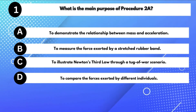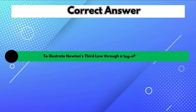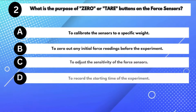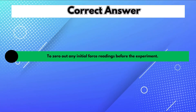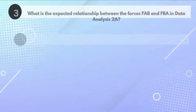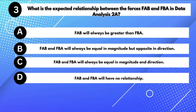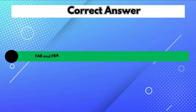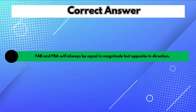What is the main purpose of procedure 2A? Answer A: To illustrate Newton's third law through a tug-of-war scenario. What is the purpose of the zero or tare buttons on the force sensors? Answer B: To zero out any initial force readings before the experiment. What is the expected relationship between the forces FAB and FBA in data analysis 2A? Answer B: FAB and FBA will always be equal in magnitude but opposite in direction.